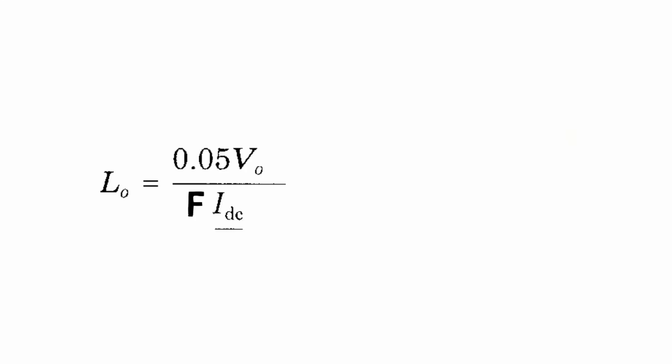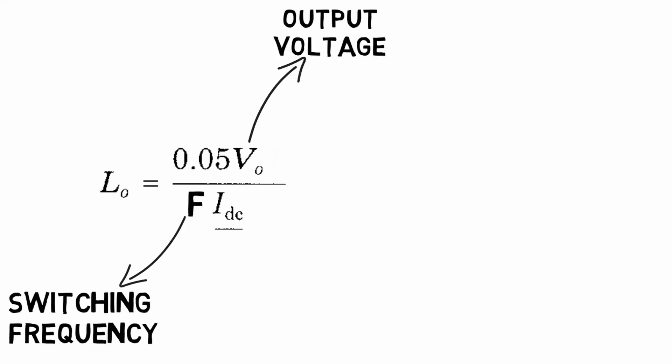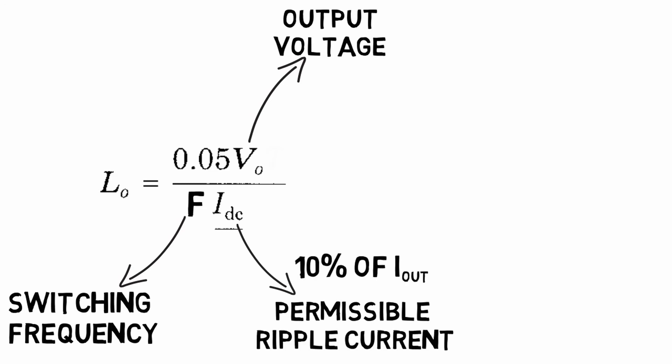Now next step is to find out the value of output inductor and capacitor. For output inductance the formula is shown, where Vo is output voltage, f is switching frequency, Idc is the permissible current fluctuation at the output. It should be less or equal to 10 percent of output current. By solving this equation we get the inductor value at 500 microhenries.